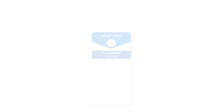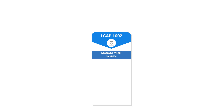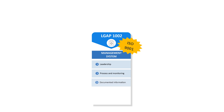LGAP 1002, the Management System standard, draws upon ISO 9001. It covers leadership, processes, record keeping, reviews and internal auditing and corrective actions.